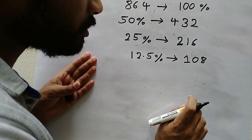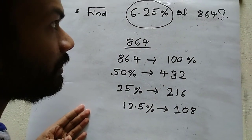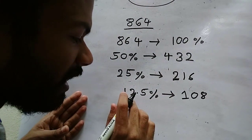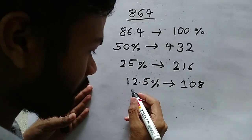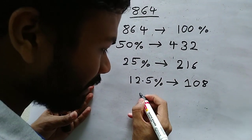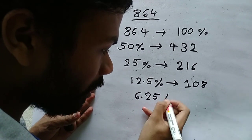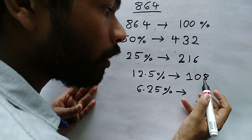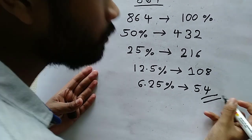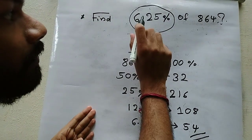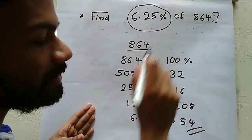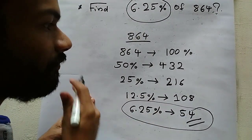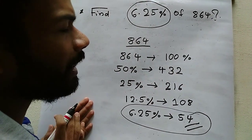Our question is to find 6.25 percentage of that number. What will be 6.25 percentage? It will be half of 12.5 percentage. So your answer will be half of 108, that is 54. So 6.25 percentage of 864 is 54. Without doing any calculations — just making halves — you will get the answer very easily from your logic only.